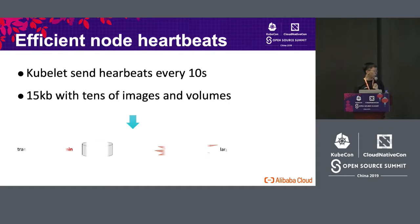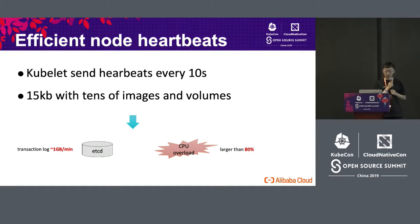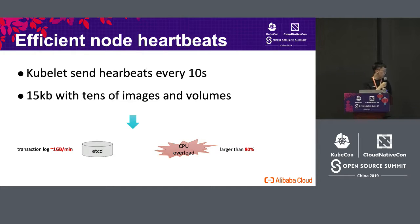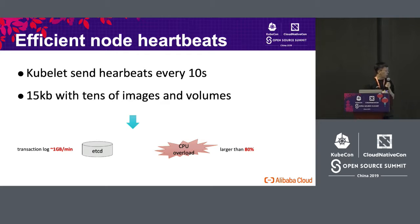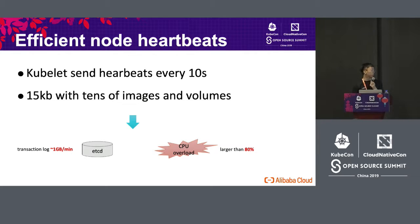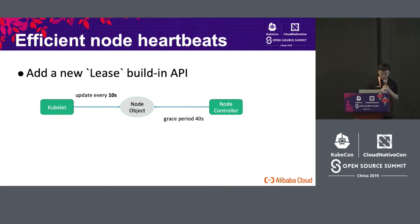Let's say we have 10,000 nodes — you can calculate what the result will be. We will have two problems. One is that if we have frequent updating of node image information in ETCD, there will be very large ETCD transaction loads. For ETCD, there will be a lot of latency, and the API server CPU consumption will be very high. The node image data is very large, and the sequence will be very big — so we need to figure out this problem.